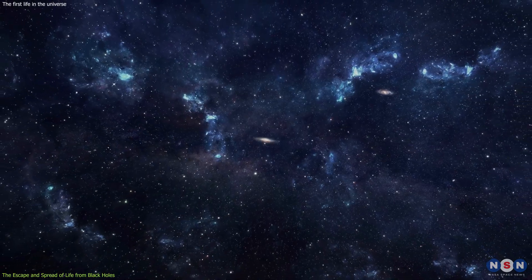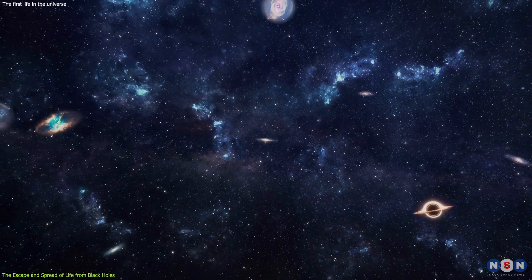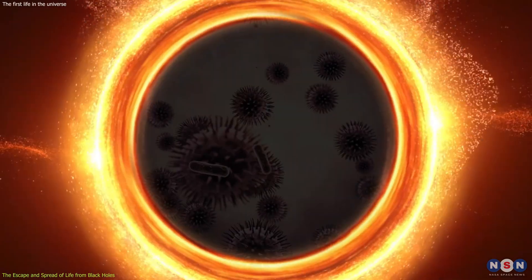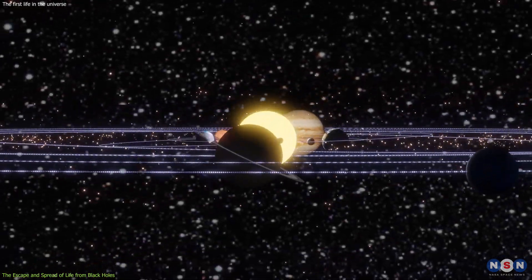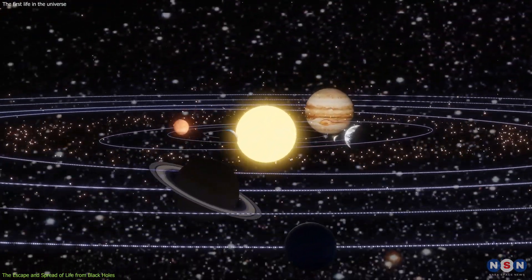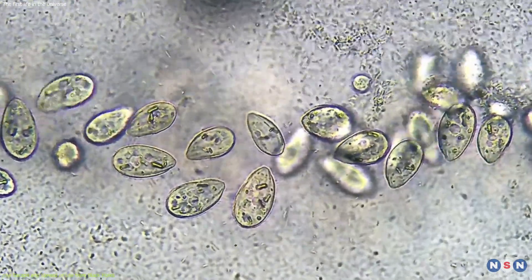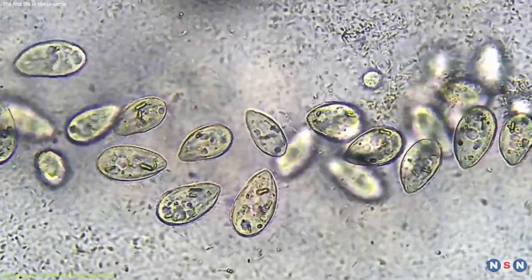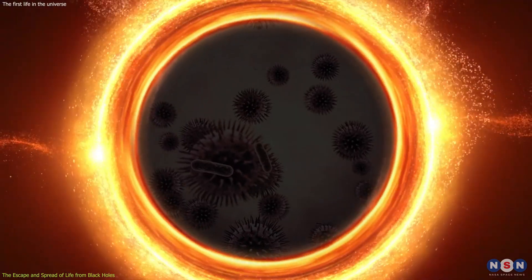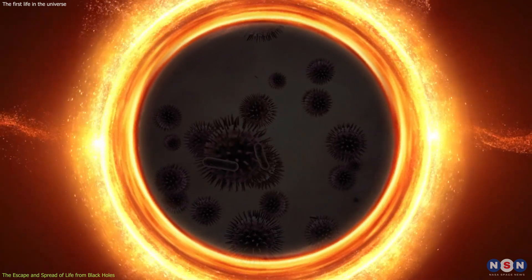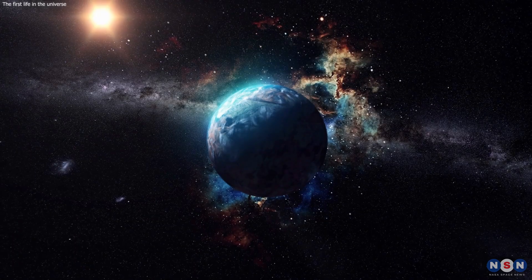They speculated that this process could have happened many times in the history of the universe, and that some of the life forms that originated from black holes could have reached our own solar system and our own planet. They also said that some of these life forms could still be living among us, or even inside us, without us knowing. This is a fascinating and provocative idea that has profound implications for the origin and diversity of life on Earth and beyond.